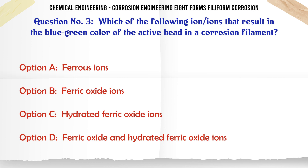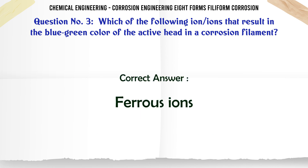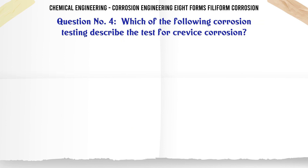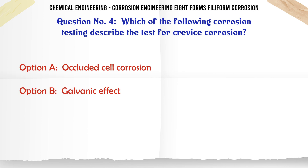Which of the following ions result in the blue-green color of the active head in a corrosion filament? a. Ferrous ions. b. Ferric oxide ions. c. Hydrated ferric oxide ions. d. Ferric oxide and hydrated ferric oxide ions. The correct answer is a: ferrous ions.